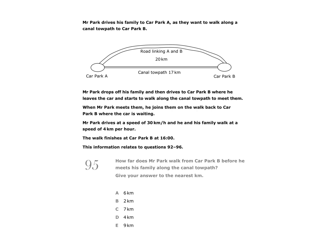When Mr Park drops his family at car park A, he makes the journey to car park B along this road. It's 20 kilometres long and he travels in the car at 30 kilometres per hour. So 30 kilometres per hour means 30 kilometres every 60 minutes.